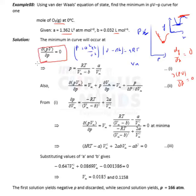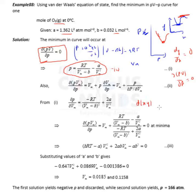This is the key concept you need — once you know this, you can solve the question. We have written the van der Waals equation in terms of pressure as equation one. Now let's compute ∂(PV_m)/∂P. Using the product rule: d(uv) = u·dv + v·du, so this becomes x·dy + y·dx.